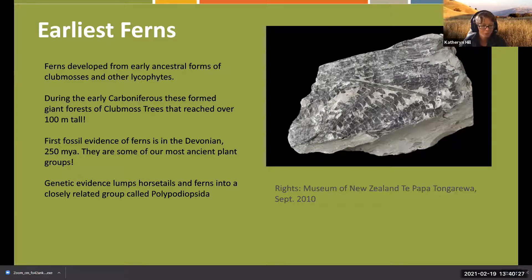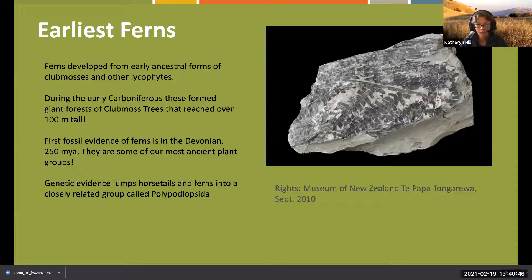Recent genetic evidence lumps horsetails and ferns into a more closely related group. People didn't realize how closely related they were, but in fact they both use spores to reproduce, the same as mosses, liverworts, and other lycophytes. They actually use a very similar reproductive strategy.